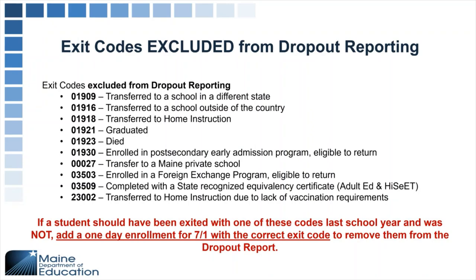Students who are exited from State Synergy with any of these codes will be excluded from dropout reporting: transferring to a different state, transferring outside the country, or transferring to home instruction. We wouldn't expect to see those students enrolled on October 1 because they have gone elsewhere. Similarly, students who have graduated won't be showing up either. If a student should have been exited with one of these codes last school year but was not, you'll need to add a one-day enrollment for 7-1 with the correct exit code to remove them from the dropout report.